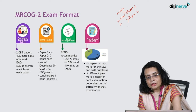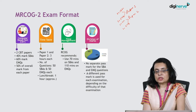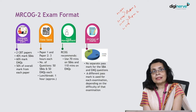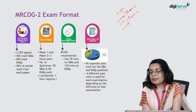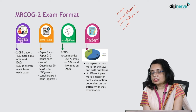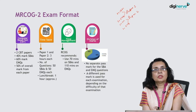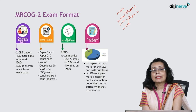The thing to remember is that more weightage is given to the EMQs. As per RCOG, you must spend at least 70 minutes on the SPAs and 110 minutes on the EMQs, because nearly 40 percent of the marks come from SPAs and 60 percent from EMQs. The duration of each paper is 3 hours.